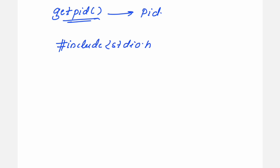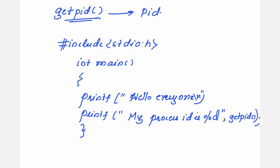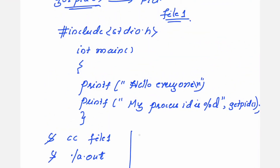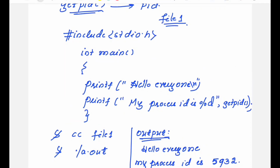Let me write one simple program. Without using the fork system call, let us find out the PID of a particular program. Suppose you name this file 'file1'. You compile it with the command cc file1, then run it with ./a.out. In the output, you will see two lines because there are two printf statements: 'hello everyone' and 'my process ID is' followed by a number like 5932. This is a program in which we have not used the fork system call.